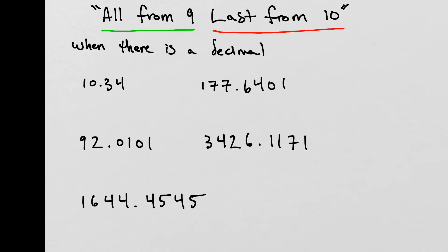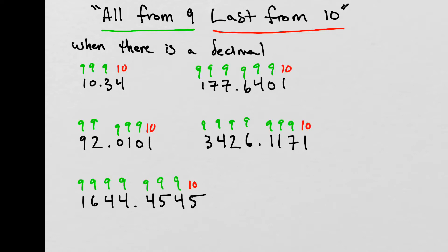The last case when using the formula 'all from 9, last from 10' is when there is a decimal. When there's a decimal, we treat it just the same as all the other cases and simply bring the decimal down. For the first problem: 9 minus 1 gives us 8, 9 minus 0 is 9, 9 minus 3 is 6, and 10 minus 4 is 6. We just bring that decimal on down.